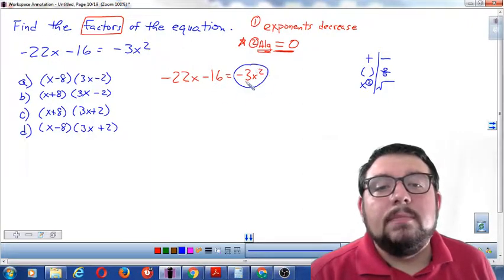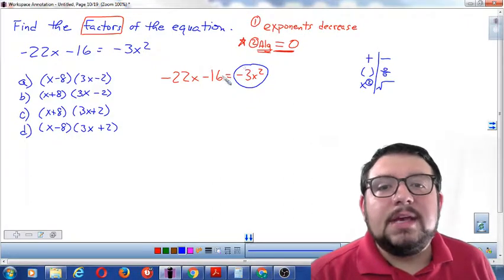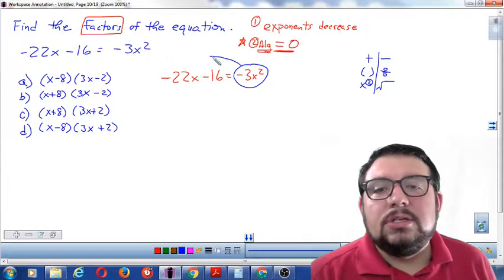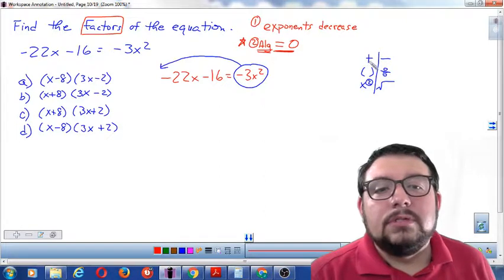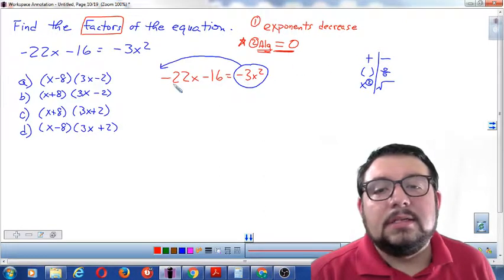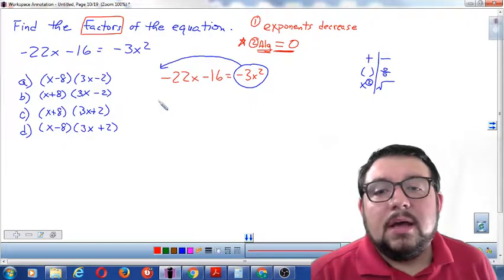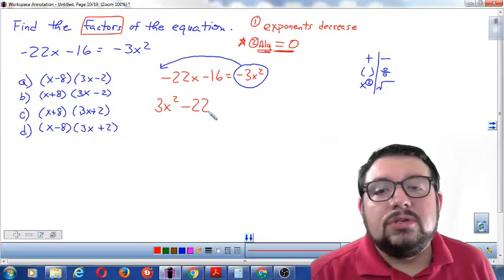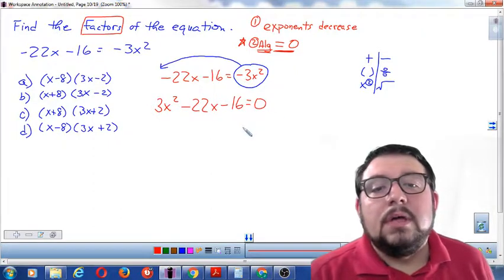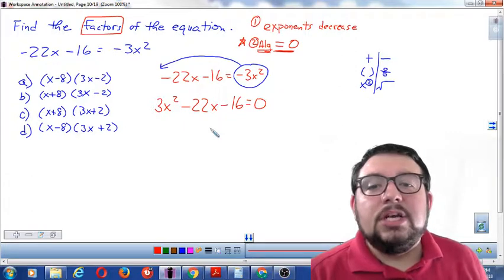Alright, so let's take this term. I want to make one side be zero. I want it to be empty—zero means empty. So I'm going to take this term and just move it across the equal sign. If I do that, I have to honor the opposites rule. So if it's negative on this side, I have to make it positive on this side. So I'm going to say positive 3x² minus 22x minus 16 equals zero. That keeps everything equal by changing that sign.